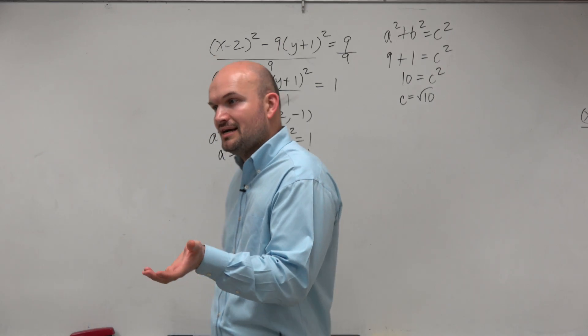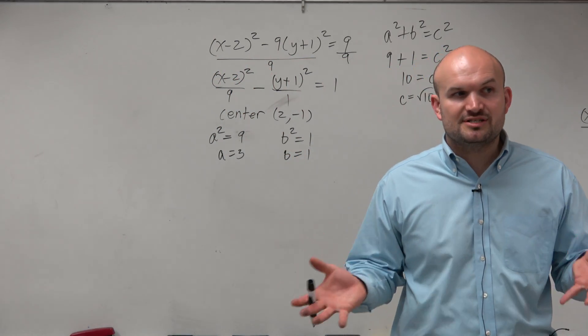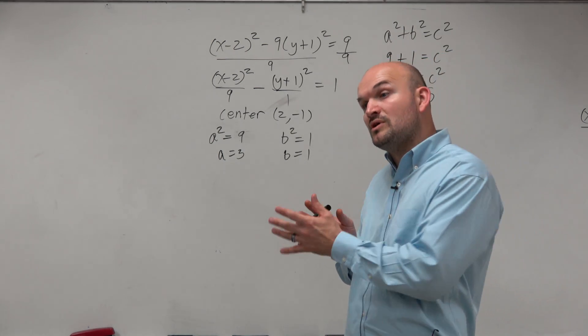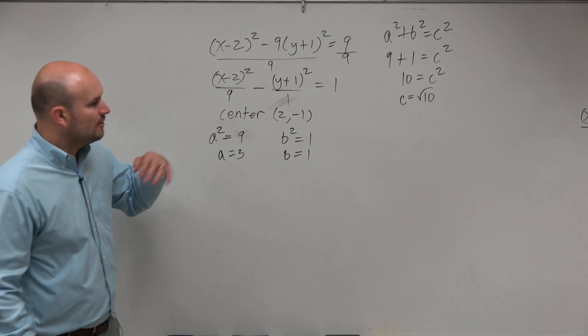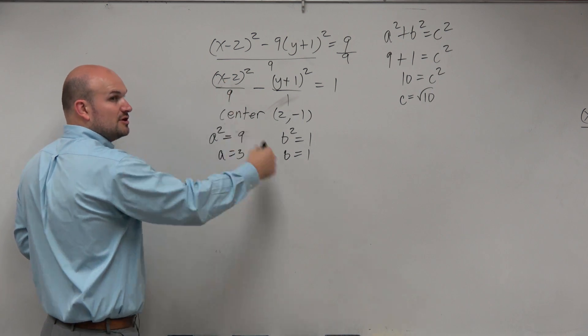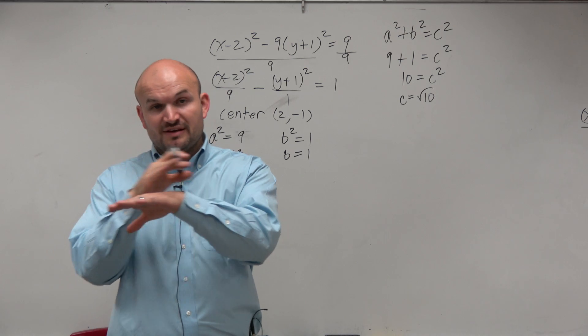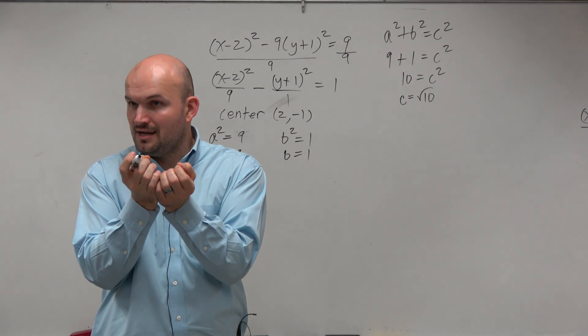And it's basically the same process, just given different equations. But now that we've evaluated this, now we just need to understand, are we dealing with a transverse axis that's horizontal or vertical? And again, that all comes down to where is my a² under? In this case, my a² is under my x, so I'm going to have a horizontal transverse axis.